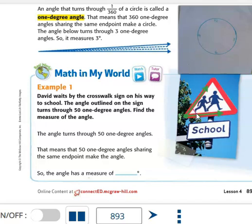You see this little arc, the pink arc that's shown there. That is showing the measurement of the angle. The angle turns through 50 one-degree angles sharing the same endpoint, which is right here, to make the angle. So the angle has a measure of 50 degrees.